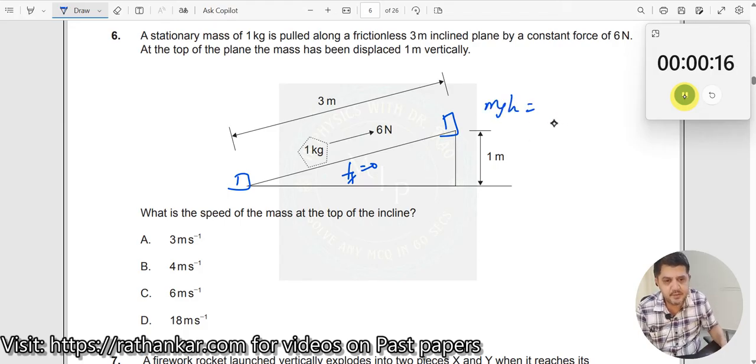Which should be equal to, what is mass? Mass is 1 kg multiplied by 10 multiplied by h which is 1. So this should be equal to 10 joules. This is the amount of energy you need to supply, minimum amount of energy you need to supply, so that you are lifting it by the side.